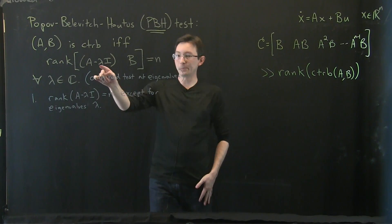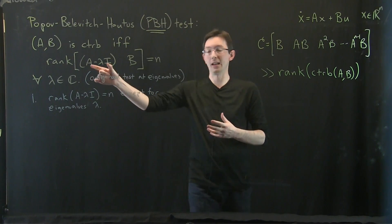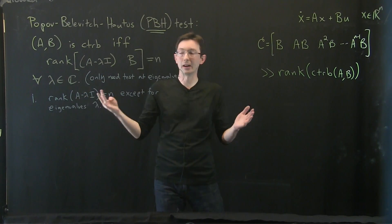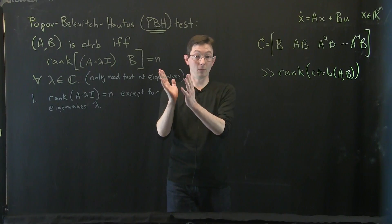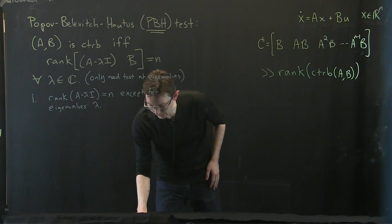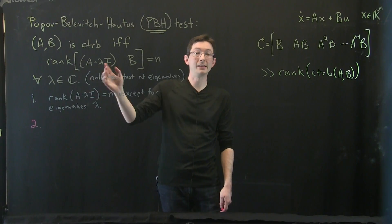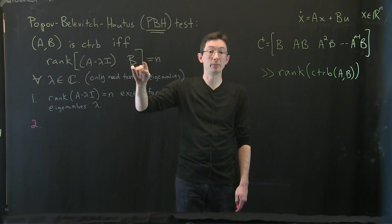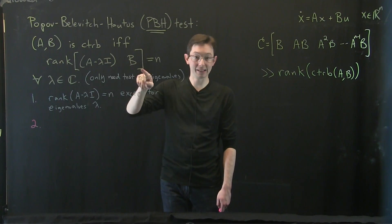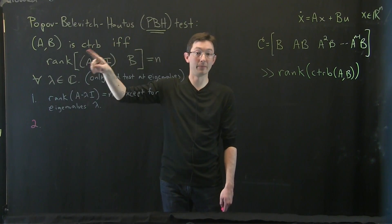Let's think a little deeper. If we pick an eigenvalue and plug it in, A − λI is now rank deficient. But in what direction? The null space of A − λI is the eigenvector. This thing is rank deficient in exactly the eigenvector direction. So for this to have rank n — for the system to be controllable — the actuation matrix B has to have some component in that eigenvector direction to be linearly independent from this matrix.